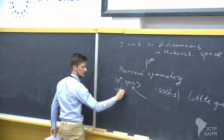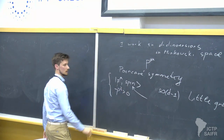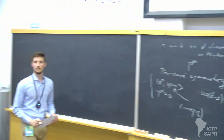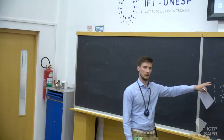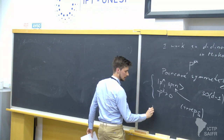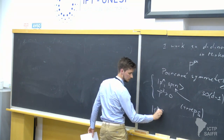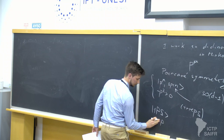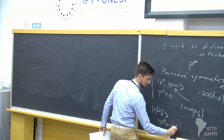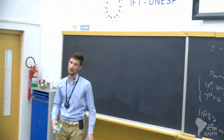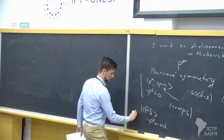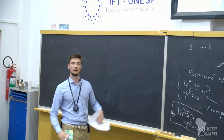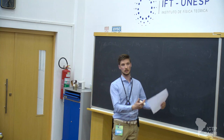P squared greater than zero. These are irreps. There's a very special type of representation inside this reducible representation called one-particle states, which I'll denote by 1PS. There are such states which obey the constraint P squared equals minus M squared, where M is some discrete real number, and we call it mass.